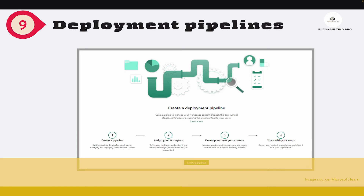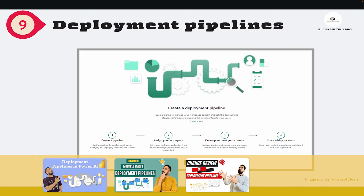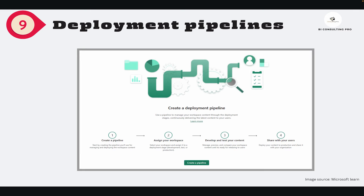Next is Deployment Pipelines. I have already created a couple of videos on this. Deployment pipelines allow you to move Power BI artifacts — such as reports, dashboards, or datasets — from dev to test, or test to staging, or staging to production. This is a feature of Microsoft Power BI Premium; if you don't have a Premium or PPU license you cannot use them.